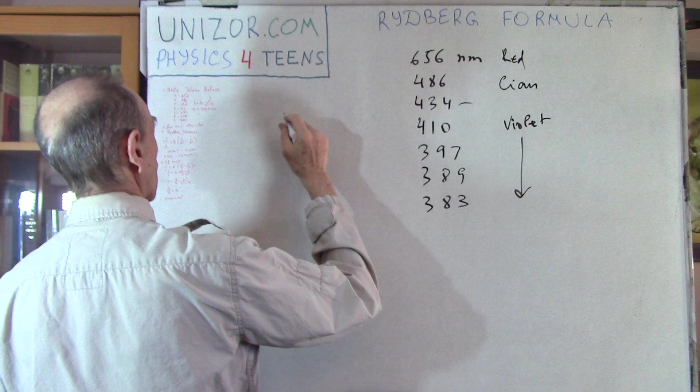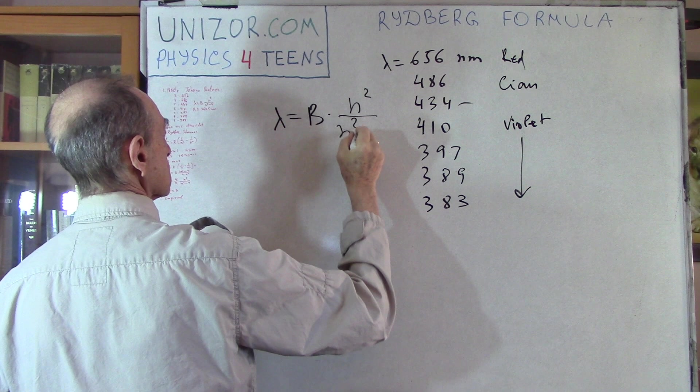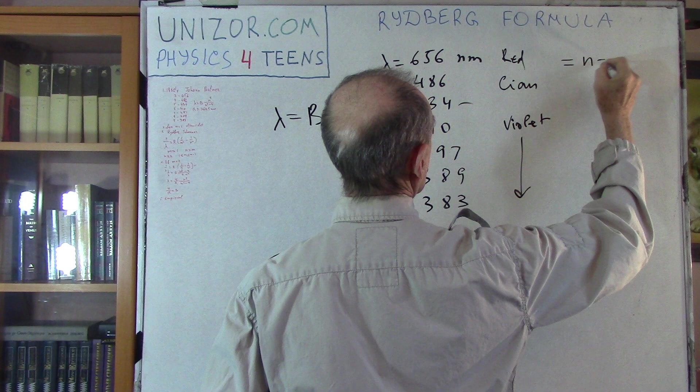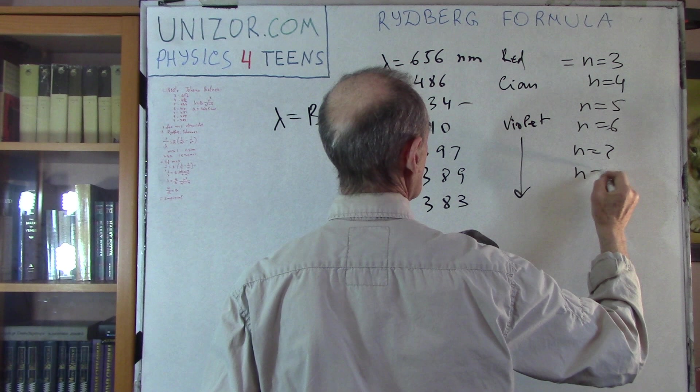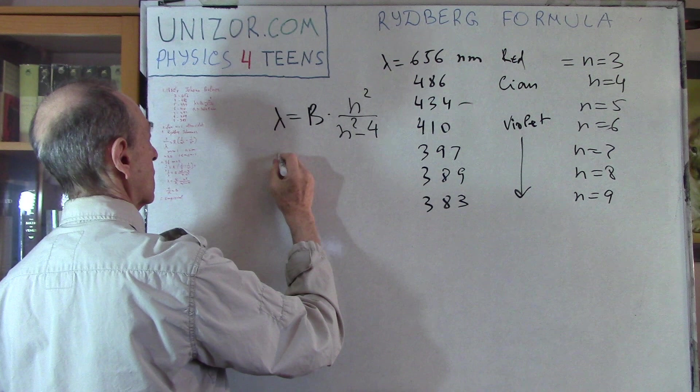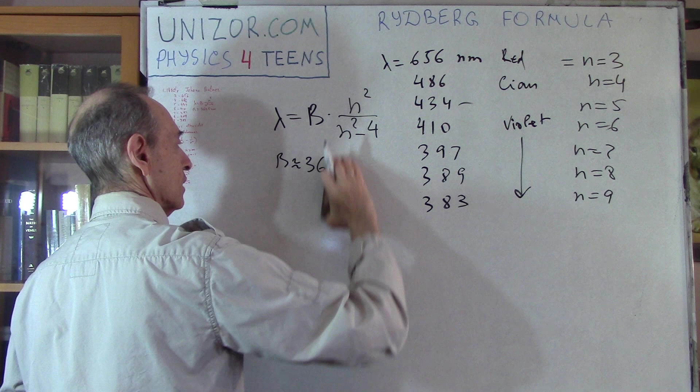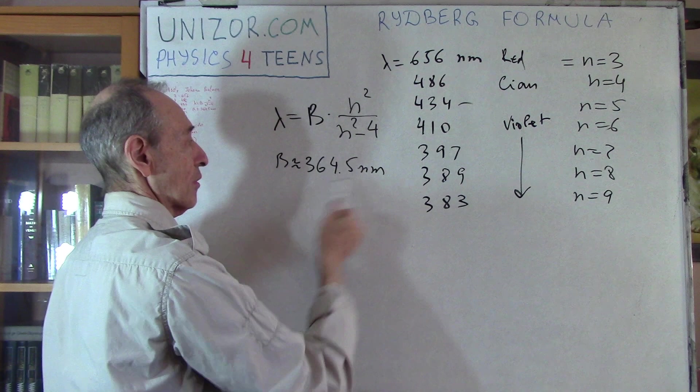Anyway, he came up with this formula. He was probably thinking a lot about this. He was not really explaining why this formula describes exactly these particular numbers. But anyway, he managed to come up with this formula and it looks like this. Lambda equals some kind of a constant B times n squared divided by n squared minus 4, where this is n equals 3, this is n equals 4, this is n equals 5, n equals 6, n equals 7, n equals 8, and n equals 9. If you substitute n into this formula, where B is approximately 364.5 nanometers, you will get these numbers. I checked. Yes, it does correspond.